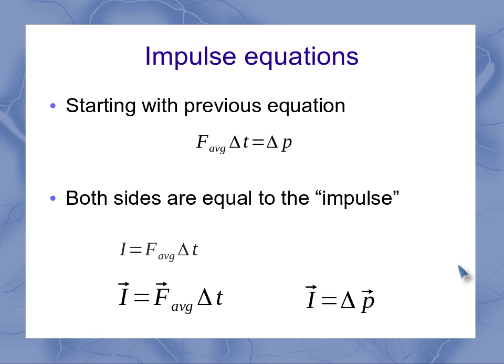Now we want to be careful because both of these quantities are really vector quantities. So the impulse and average force are vectors, and the impulse and change in momentum are vectors.